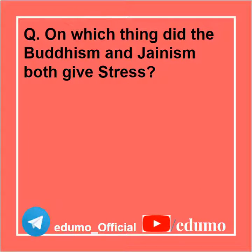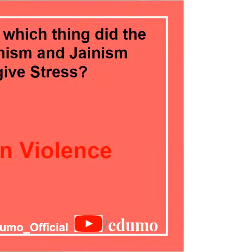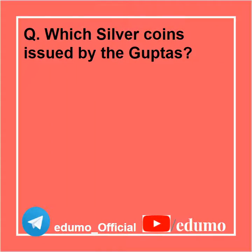On which thing did Buddhism and Jainism both give stress? Non-violence. Which silver coins were issued by the Guptas? Rupayak.